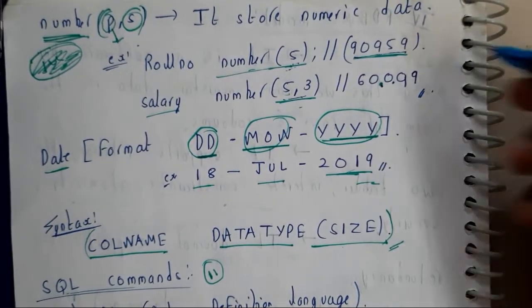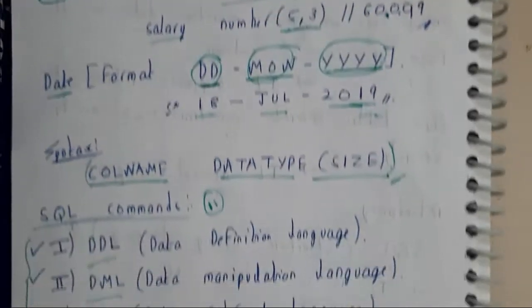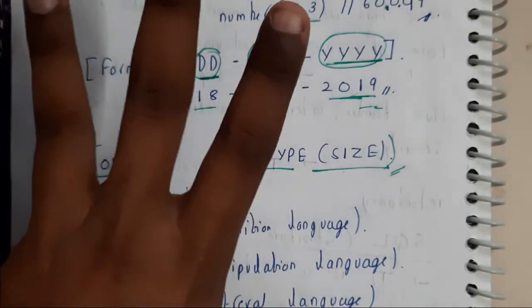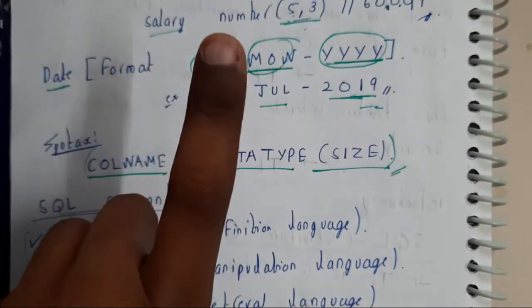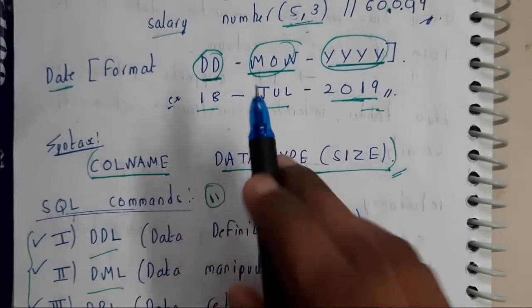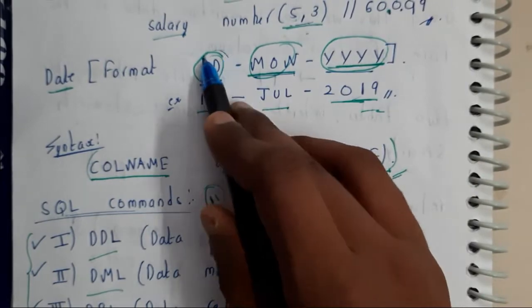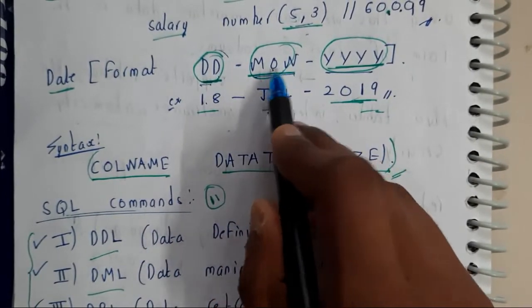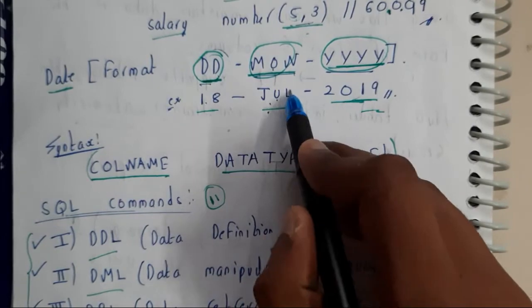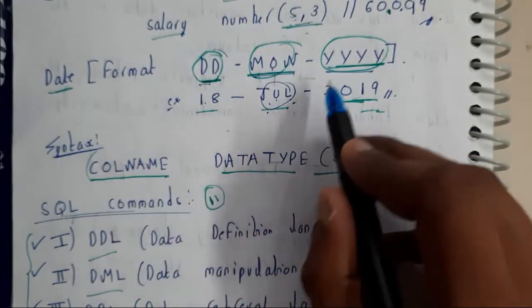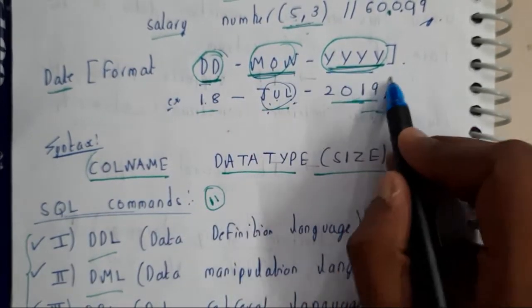The date - so I told you that we are having three. We are done with character, number, now that left out one is date. We are having a particular format for date, that is nothing but DD-MON-YYYY. So date day, this is nothing but 18, month means July J-U-L, it will be always in three letters, three characters, and four wise four digits like 2018, 2019, 2050, like that.